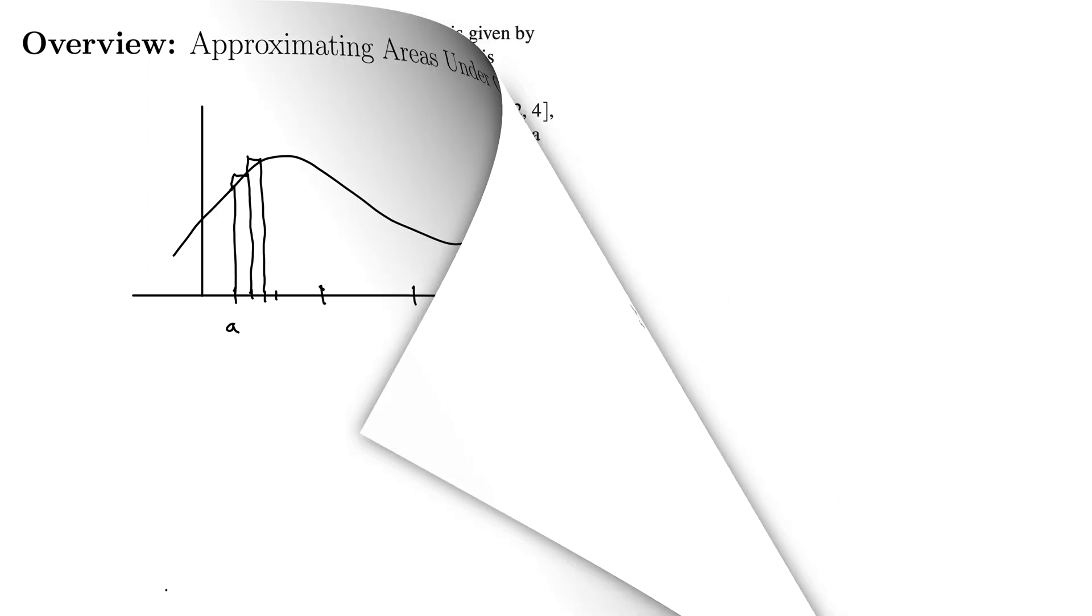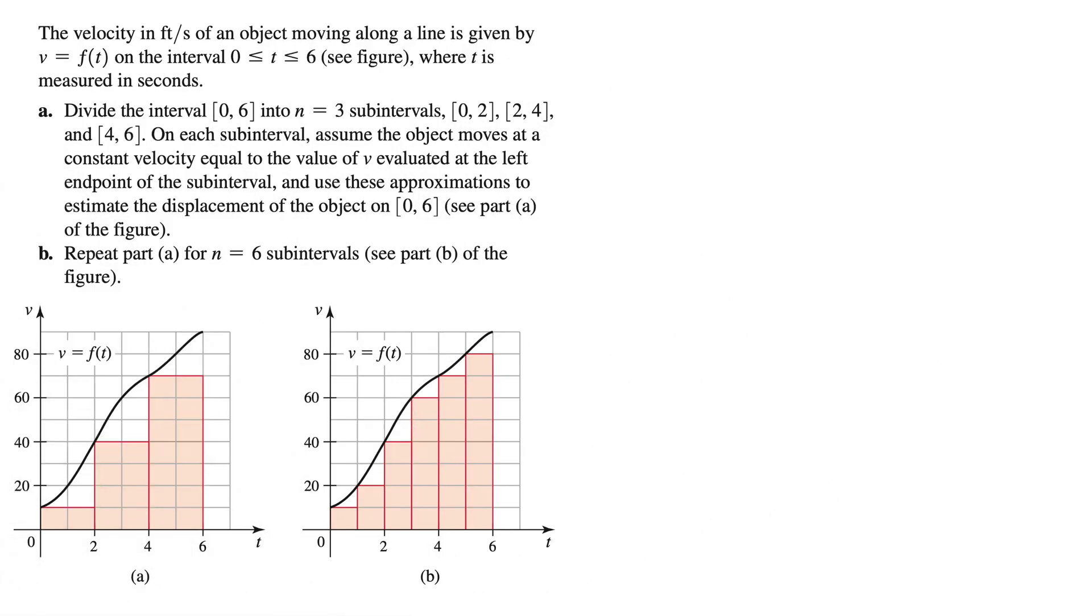Let's try a concrete example. This example says the velocity in feet per second of an object moving along a line is given by v equals f(t) on the interval 0 less than or equal to t less than or equal to 6. So what that's saying is this function here is actually the same function on both of these. This is our velocity function. And here we have time going from 0 to 6 in both cases. Part A says divide the interval from 0 to 6 into n equals 3 subintervals: 0 to 2, 2 to 4, and 4 to 6. We can do that. In fact, it looks like they've already done it for us here in part A. So we have this one, this one, and this one. We're just chunking this thing out under this curve to make these rectangles.